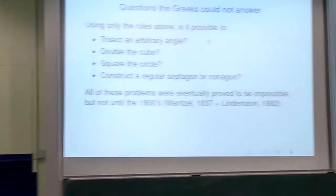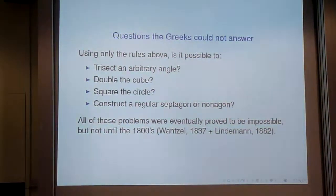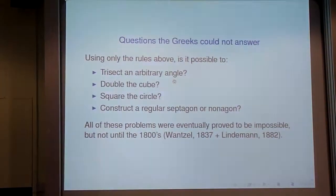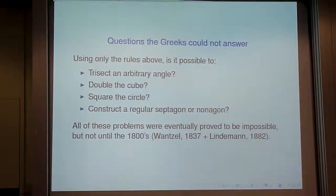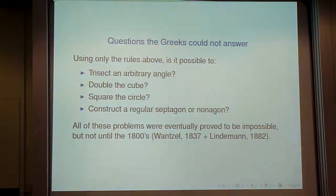The Greeks figured out all this stuff and a lot more. But there were several problems they suspected were impossible. The first: is it possible to trisect an arbitrary angle — divide it exactly into three equal angles? The second, usually phrased as 'doubling the cube': if given a cube of arbitrary volume, is it possible to construct a cube exactly twice that volume? In two-dimensional terms, this asks: is it possible to construct the cube root of 2?